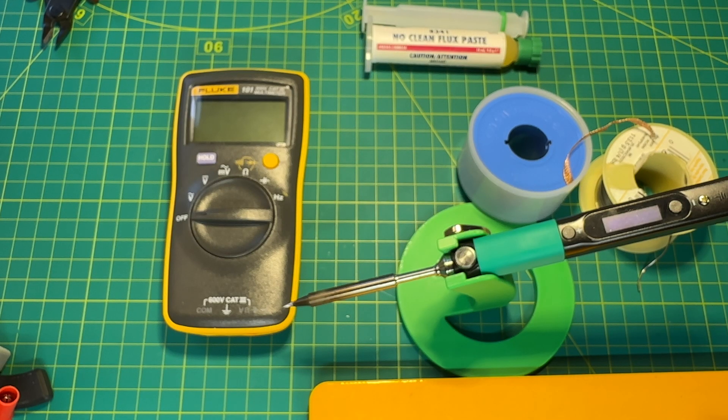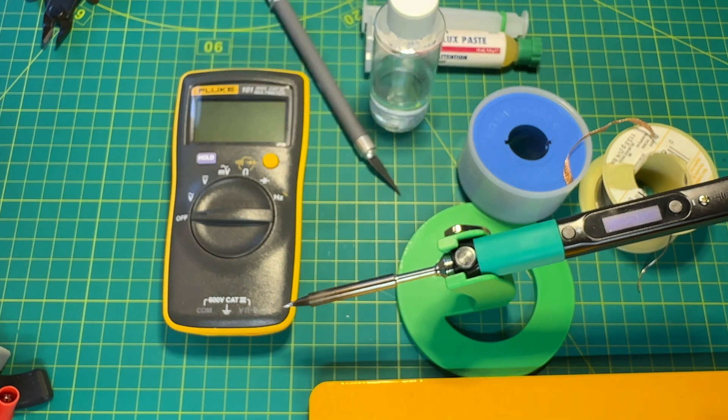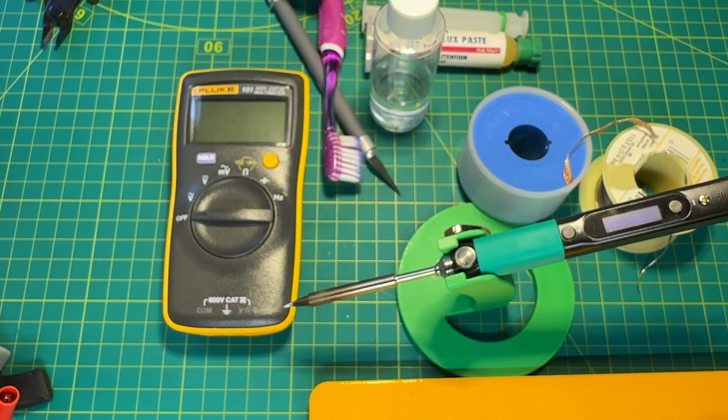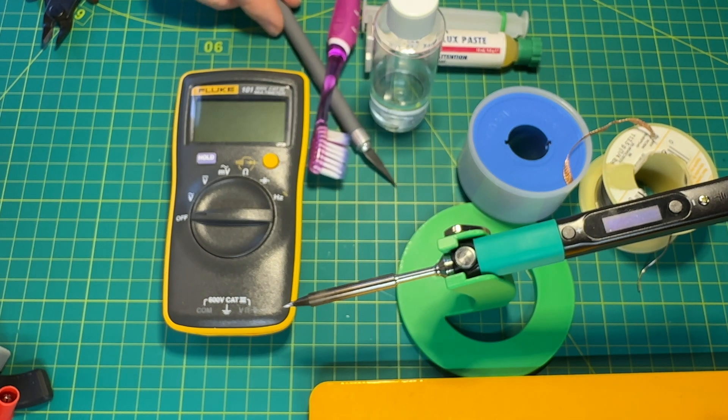Some other things you might already have or buy if you need to. An X-Acto knife, some alcohol, and a toothbrush to clean off any excess flux from the boards once you're done soldering.